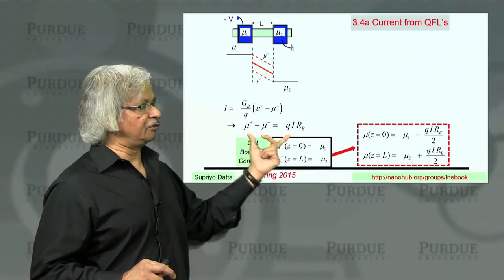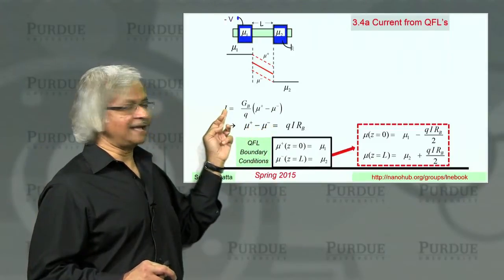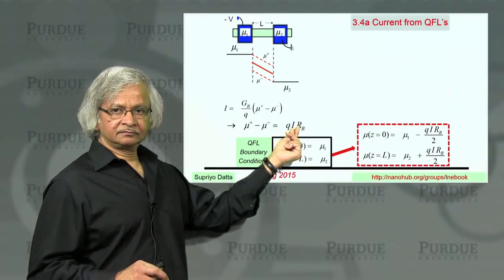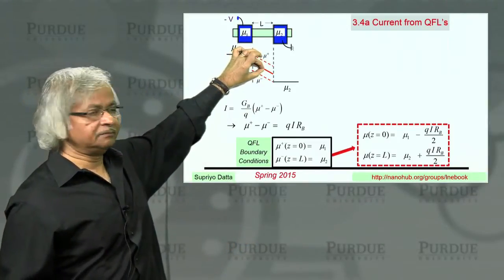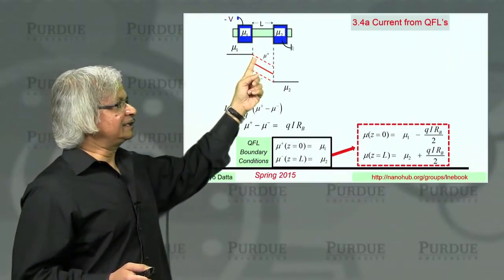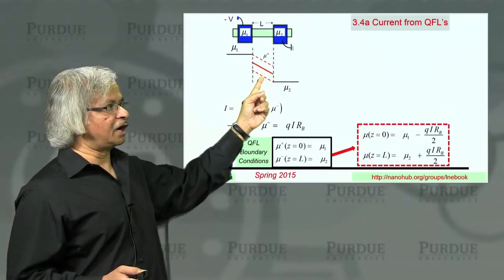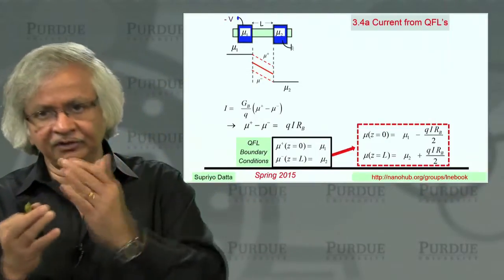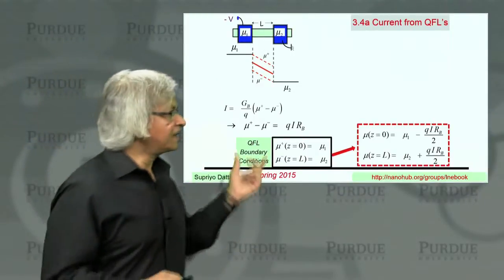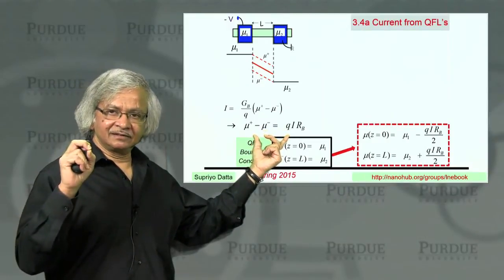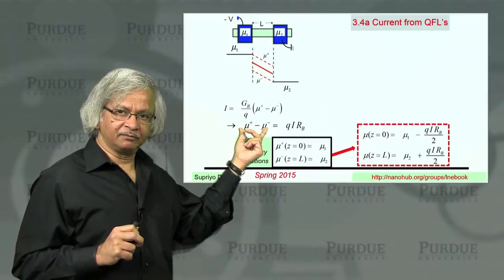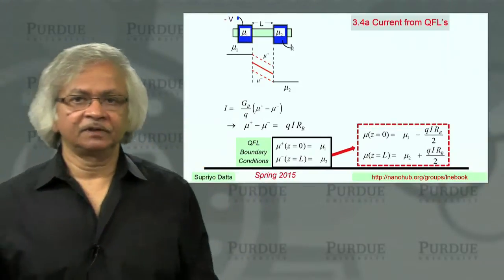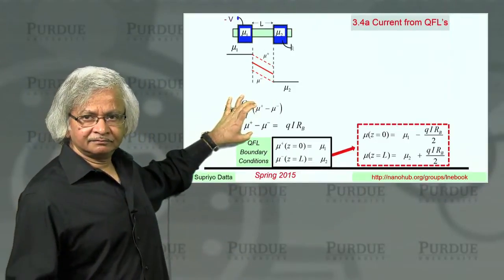If you take this, you could turn it around and write it in this form — this just follows algebraically. What it says is that the separation of quasi-Fermi levels is proportional to the current. If there is no current, the two quasi-Fermi levels will collapse into one. That makes sense because mu plus tells you how well the right-moving states are filled, and mu minus tells you how well the left-moving states are filled. If there is no current, they are all equally filled. Current flow means right-moving things are more filled than left-moving things, and this relation is valid regardless of whether it's ballistic or diffusive transport.